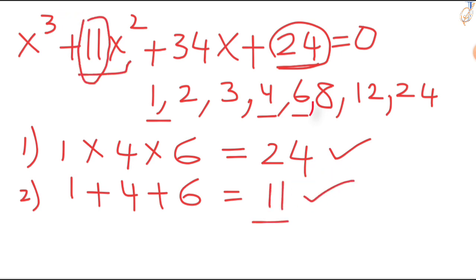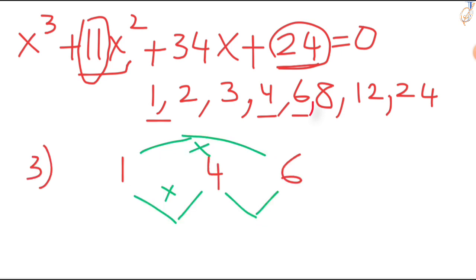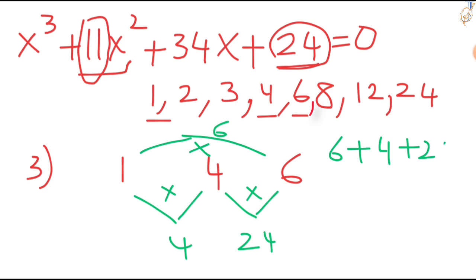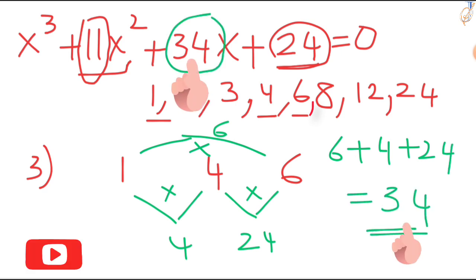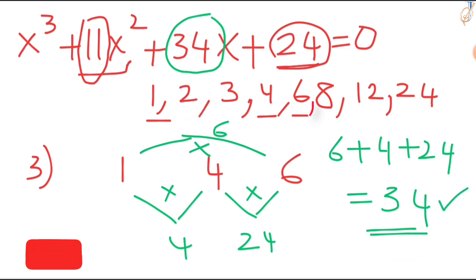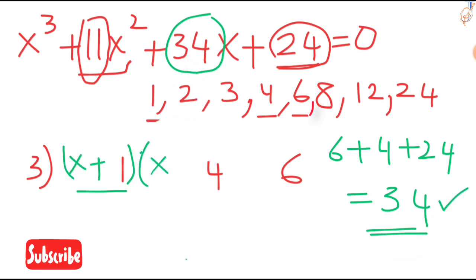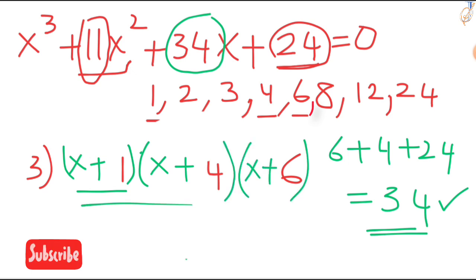Now check condition 3: multiply every two factors. So 1 times 4 is 4, 4 times 6 is 24, and 1 times 6 is 6. Add these results — this should equal the x coefficient. So your third condition is also satisfied. Your factors are x plus 1, x plus 4, and x plus 6. These are the factors of this cubic equation.